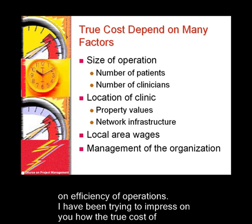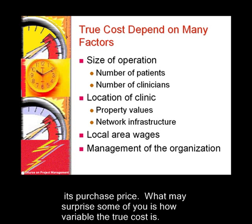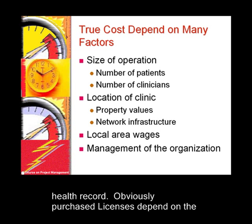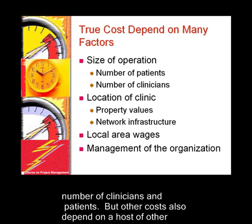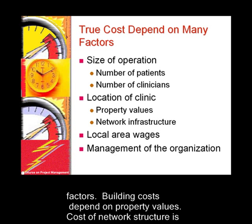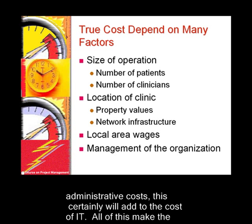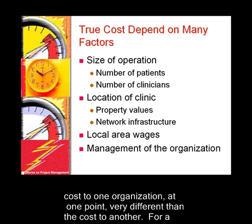The true cost of anything is a lot more than its purchase price. What may surprise some people is how variable the true cost is. The magnitude of these costs depends on the nature, size, and location of the electronic health record. Purchase licenses depend on the number of clinicians and patients, but other costs also depend on a host of other factors. Building costs depend on property values, and the cost of network infrastructure is different in a rural hospital than in one near an internet node. Some organizations have high administrative costs, which certainly adds to the cost of IT.